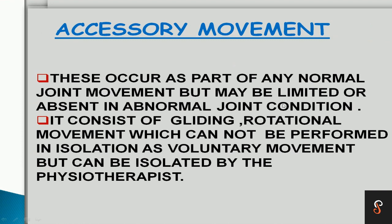Next we will look at Accessory Movement. Accessory movement is a movement that the individual cannot perform as a voluntary movement. It is a normal joint movement, but accessory movement is absent in abnormal joint conditions.